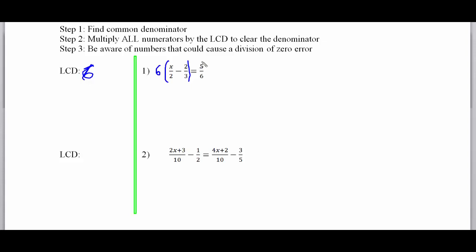This is going to simplify your work a lot, because as I distribute the 6 inside these two binomials, I've got 6 times x over 2 minus 6 times 2 thirds, and I've got 6 times 5 sixths.